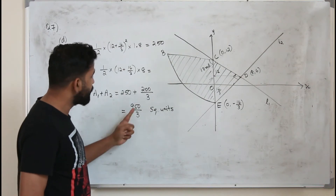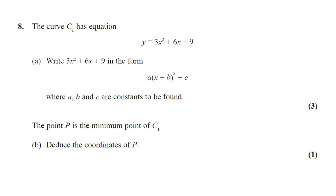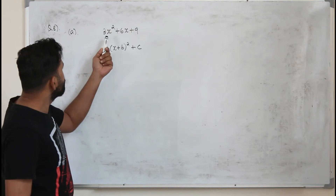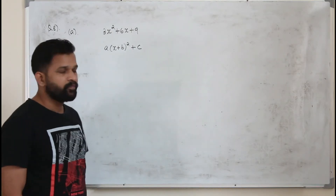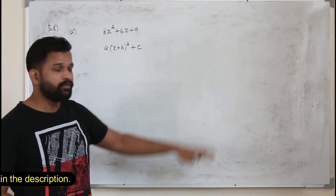Question number 8. The curve C1 has equation y equals 3x squared plus 6x plus 9. Part A: write 3x squared plus 6x plus 9 in the form a times (x plus b) squared plus c, where a, b, and c are constants to be found. This question carries 3 marks. There are two methods: completing the square, or using a direct formula.